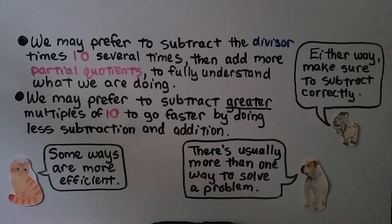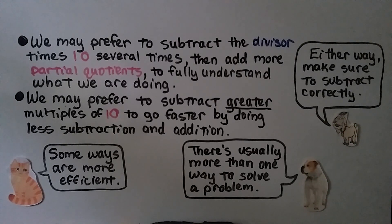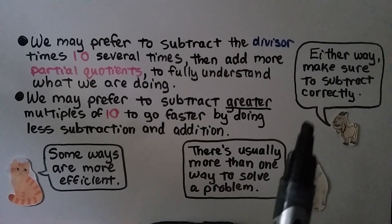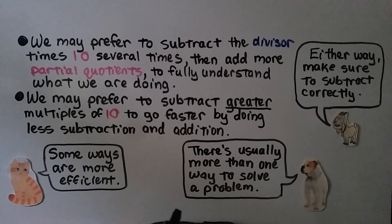We may prefer to subtract the divisor times 10 several times and add more partial quotients to fully understand what we're doing. Or we may prefer to subtract greater multiples to go faster with less subtraction and addition. Either way, make sure to subtract correctly. There's usually more than one way to solve a problem, but some ways are more efficient.